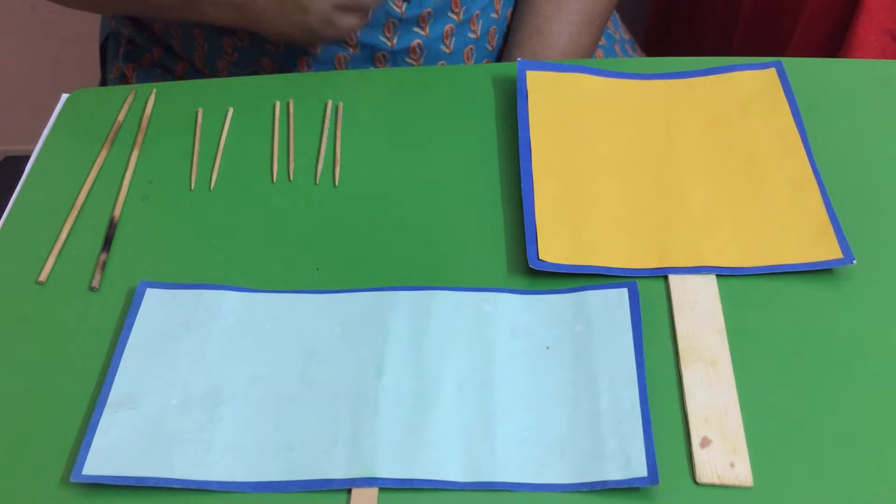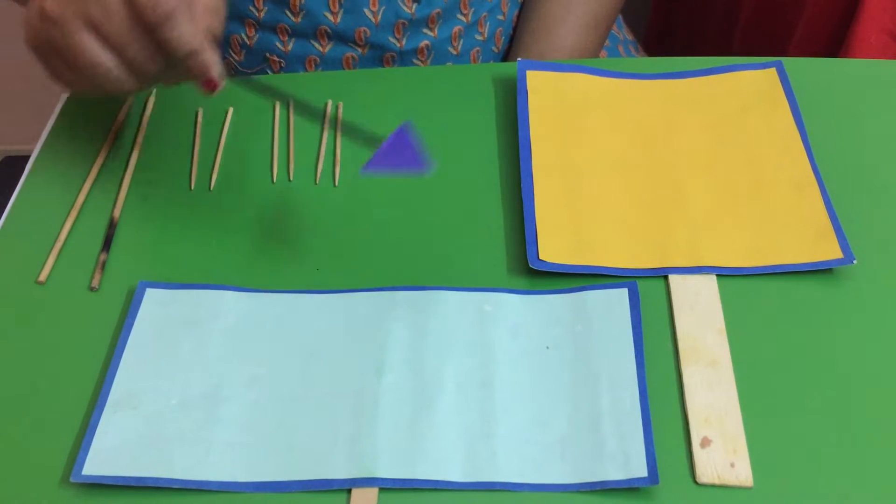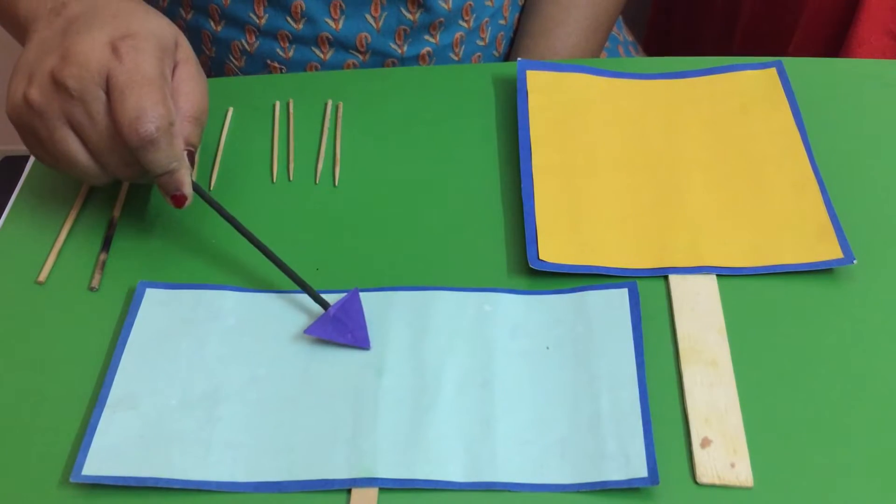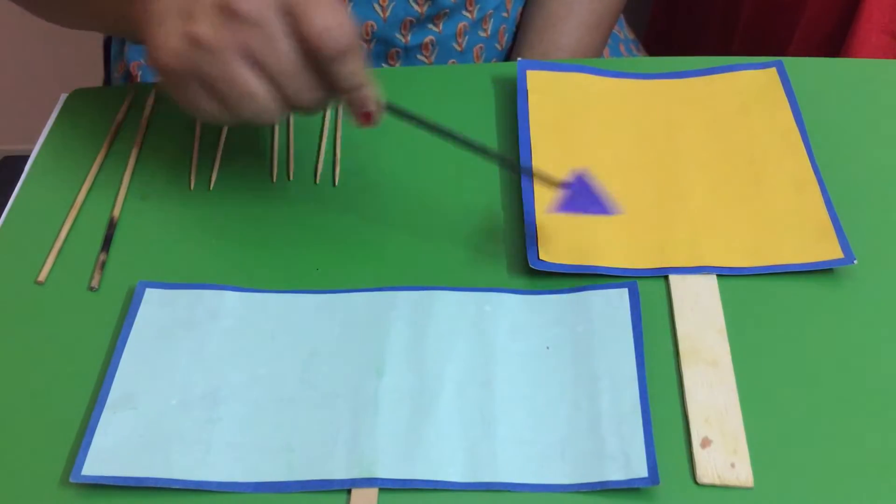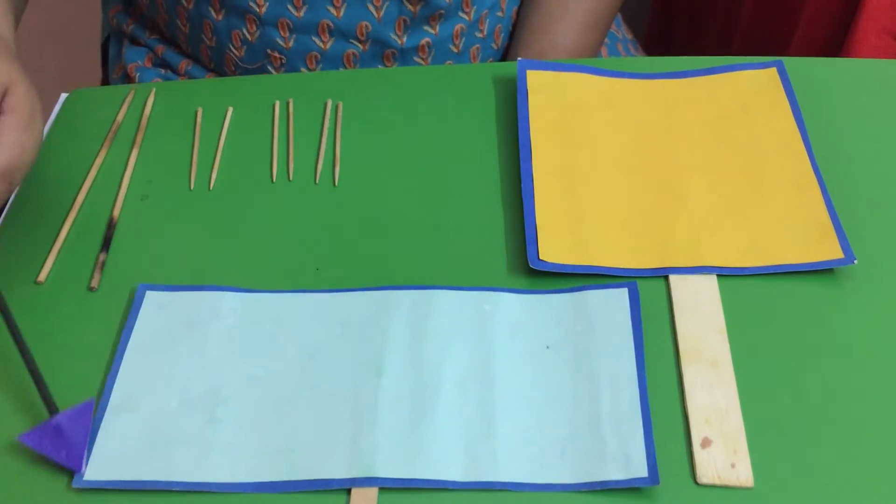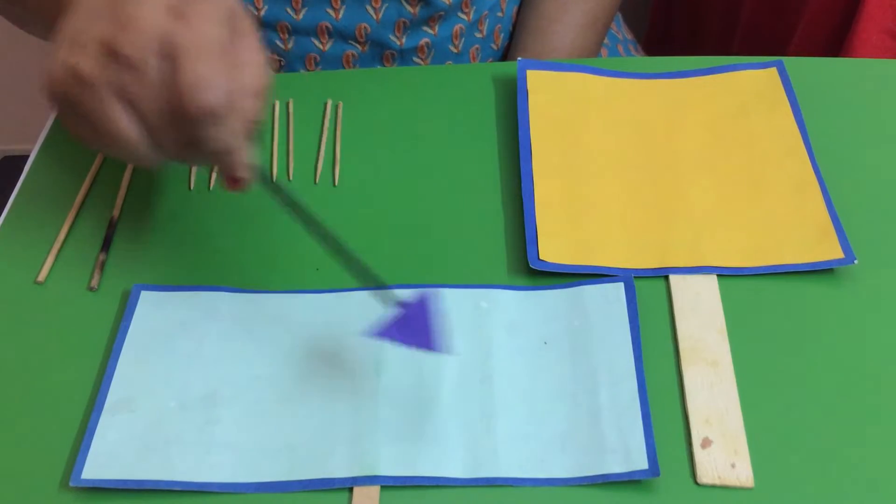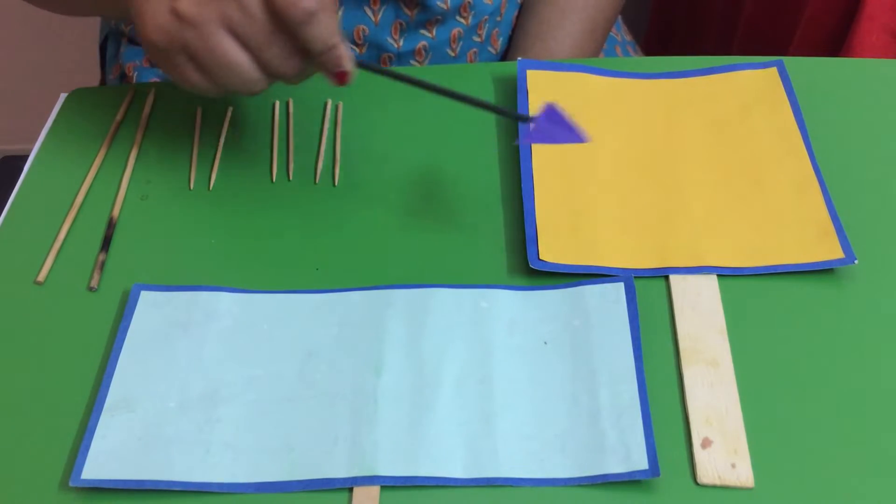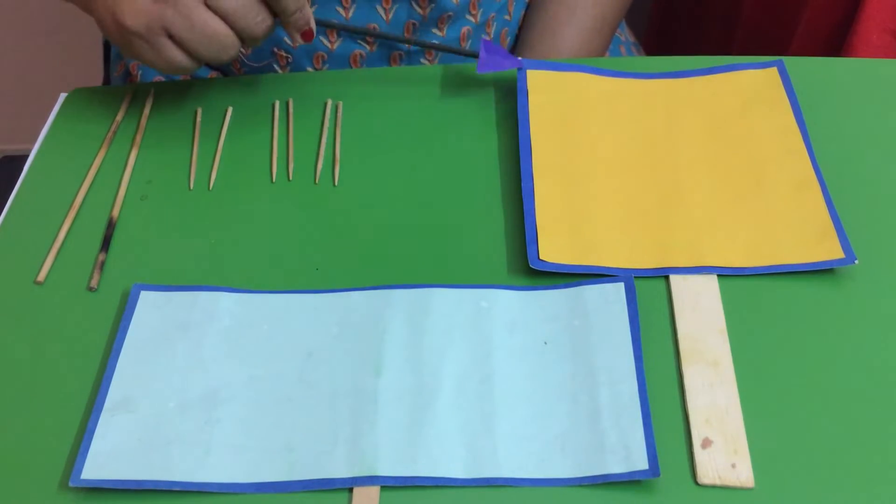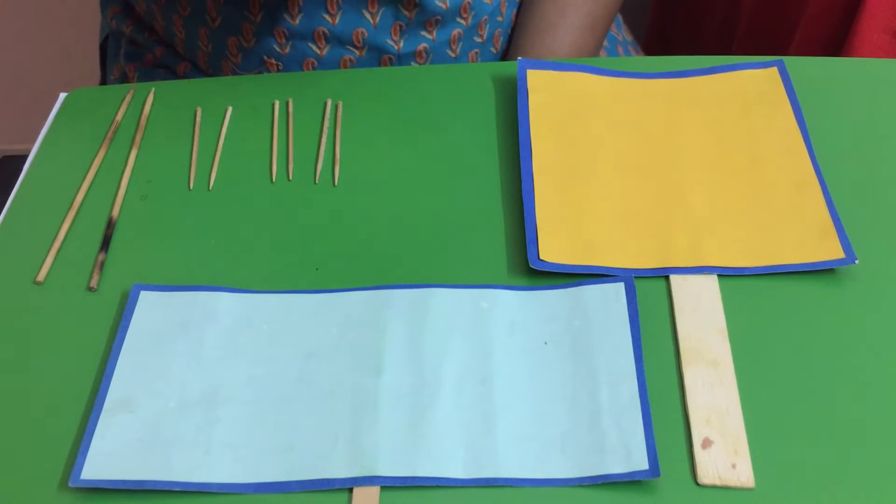So what is the similarity between the square and the rectangle? The square and rectangle has four sides. Both of them have four sides and four corners.